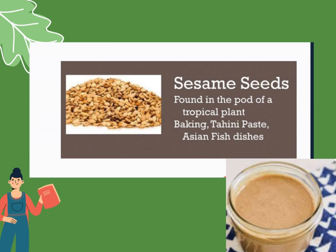Lastly, sesame seeds — found in the pod of a tropical plant. Used for baking, tahini paste, and Asian fish dishes. Yung sesame seeds po are ground or giniling para ma-process as paste — ang tawag po dyan ay tahini paste. Those are the examples of herbs and spices. Thank you.